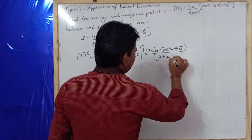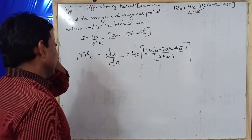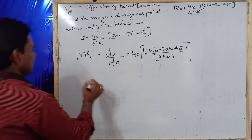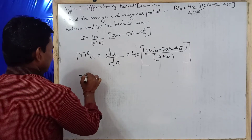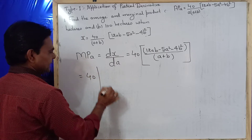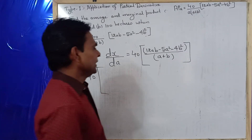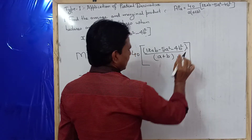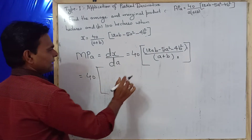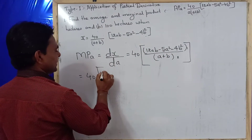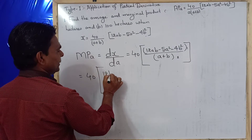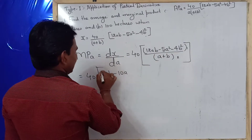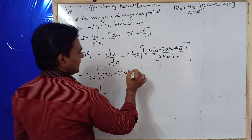This falls under the quotient rule for derivatives, so we need to take the partial derivative with respect to A. We apply the quotient rule: the upper term is the first function, the lower term is the second function. The derivative of the first function with respect to A gives 12B minus 10A, and the rest becomes zero. Times the second function, which is A plus B.